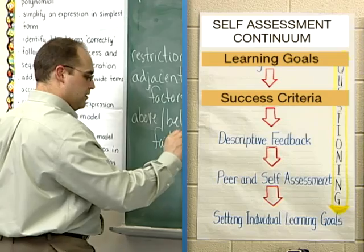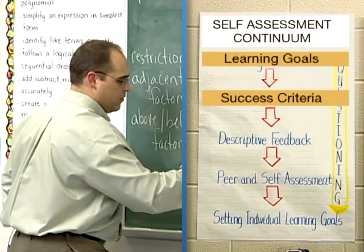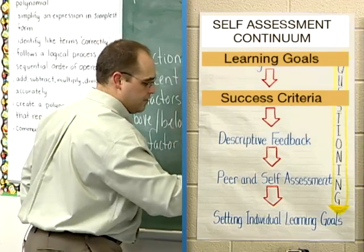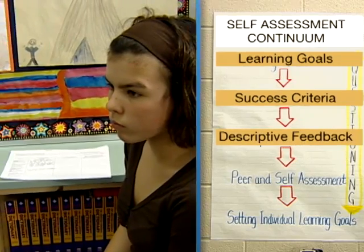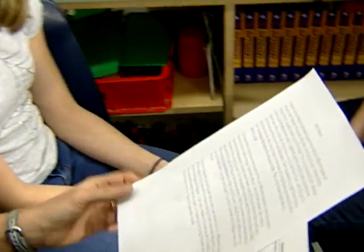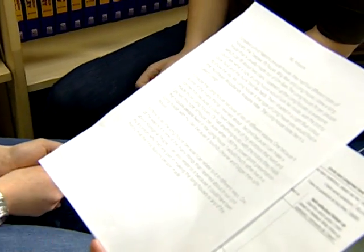Once goals and criteria are established, students and teachers use them as a basis for providing descriptive feedback. Your second paragraph here really makes some excellent connections. You're talking about the reasons that you chose the longhouse to draw, and you're talking about your ancestors, and you also related it to the PowerPoint presentation that you did in class a couple of weeks ago. So that's fantastic — I think you've made some great connections. Did you want to tell me about any of those connections that you made?